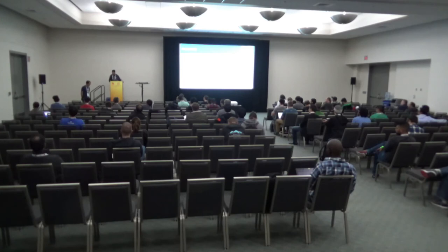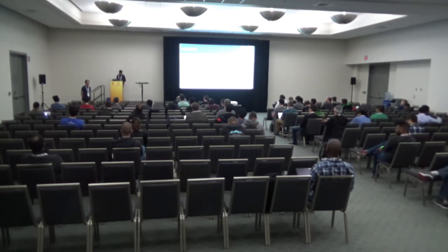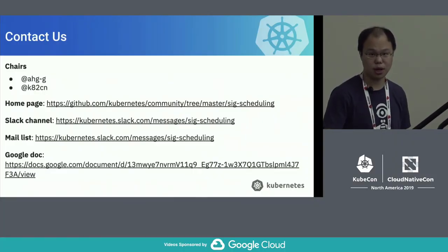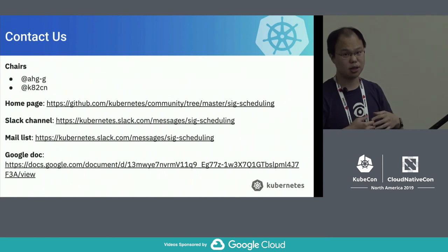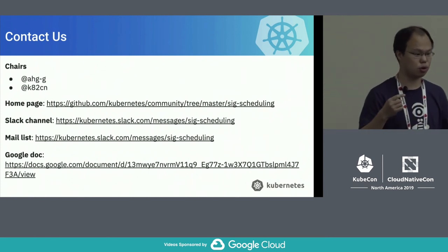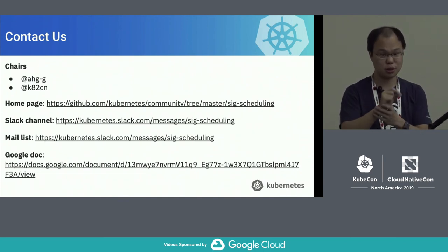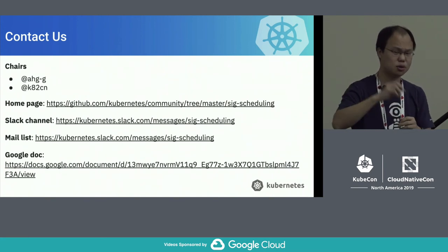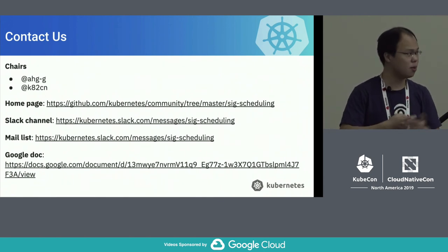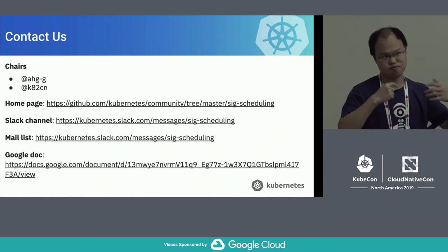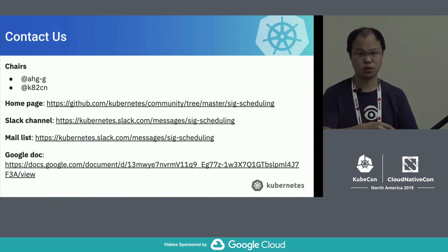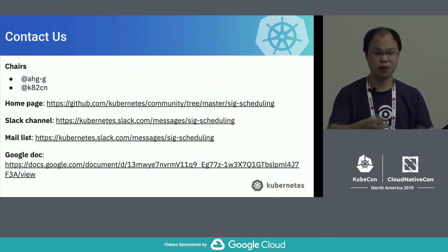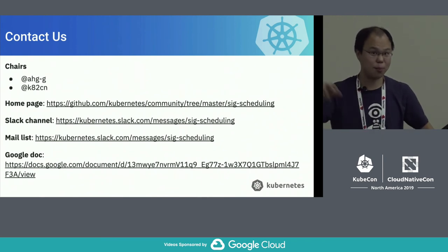Wei added that the default scheduler is not a resource manager — it doesn't spin up or destroy pods like some other schedulers. To bring batch capability into the scheduler, one option is an equivalence cache so that the scheduling calculation for the first pod can be reused for similar pods. They tried that but it didn't perform as expected. A second option is for the scheduler to act as a resource manager, but that's not the case for the default scheduler. They are looking into other ways to schedule all pods at once rather than one by one.